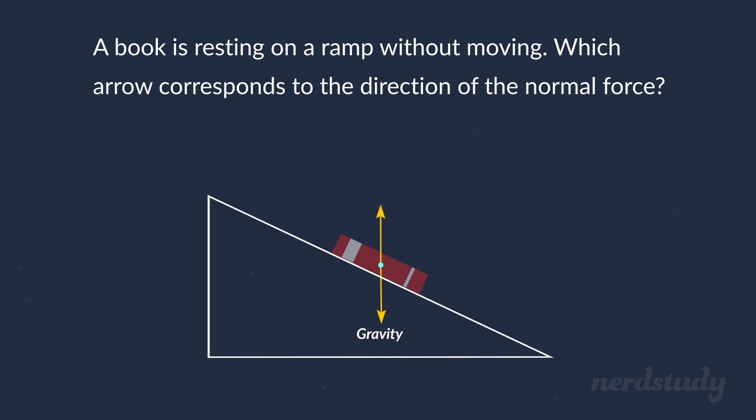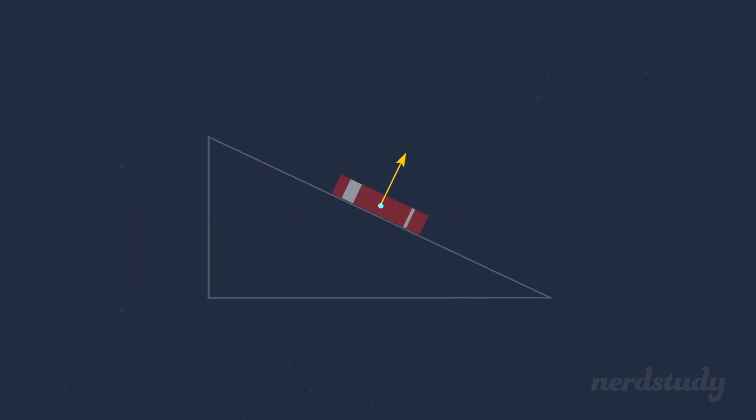Actually, if we remember the origin of the name of the normal force, we would realize that the normal force is perpendicular to the surface. Therefore, it has to be this slanted arrow, because the normal force must be normal, that is, perpendicular, to the surface. But that's not a very satisfying explanation, is it? Let's look at the problem from another point of view.